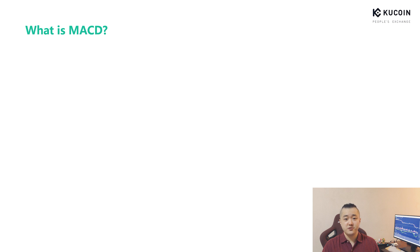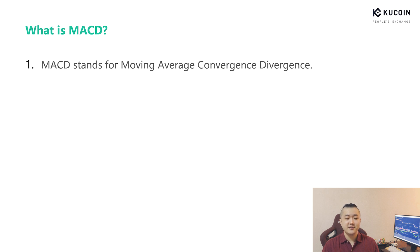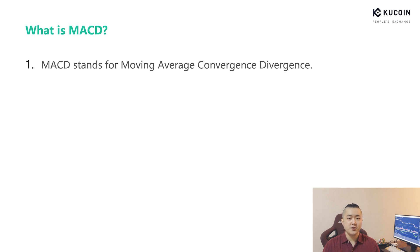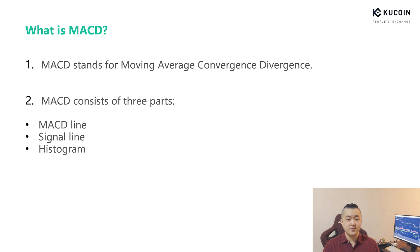So what is Moving Average Convergence Divergence? As the name suggests, MACD consists of two indicators: a Trend Indicator and a Momentum Indicator. In this way, we can learn more information from MACD regarding trading and momentum. You can use the crossover as a tool from trading indicators such as Moving Average, and data from Momentum Indicators such as Relative Strength Index. Physically, you can discover both of them in MACD. MACD indicates these in three ways: MACD Line, Signal Line, and Histogram.